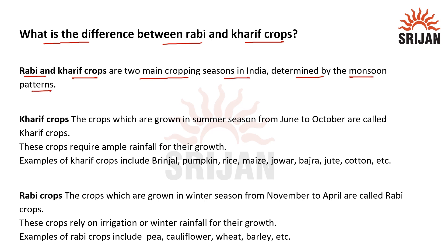First, let's talk about Kharif crops. The crops which are grown in summer season from June to October are called Kharif crops. These crops require ample rainfall for their growth. Examples of Kharif crops include brinjal, pumpkin, and rice.